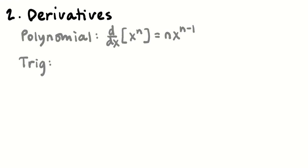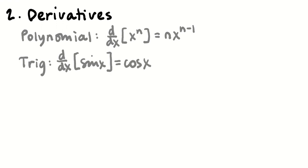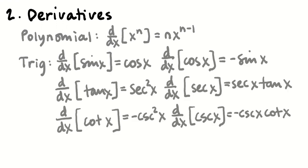We need to know our trig derivatives: the derivative of sin(x) is cos(x). We also need to know the derivatives of tangent, secant, cosecant, and cotangent — all of those.